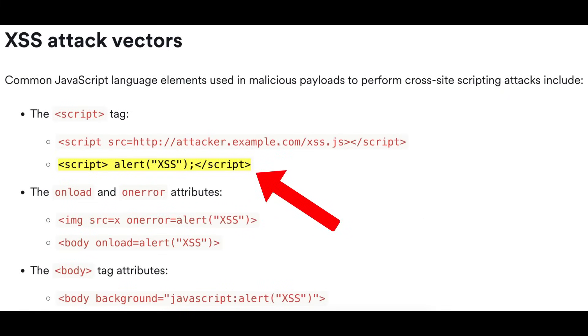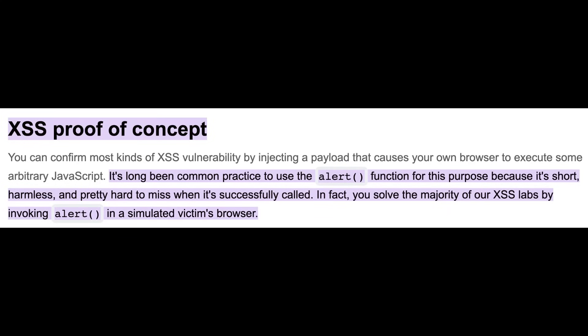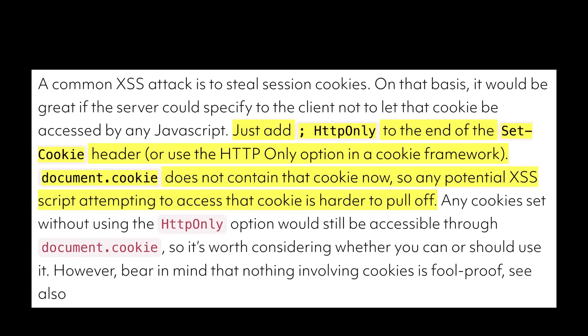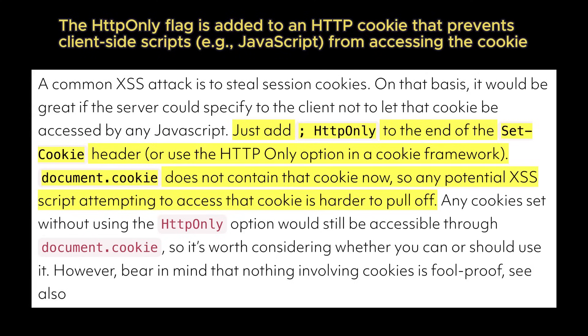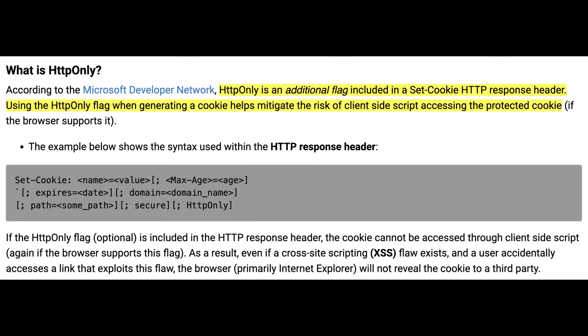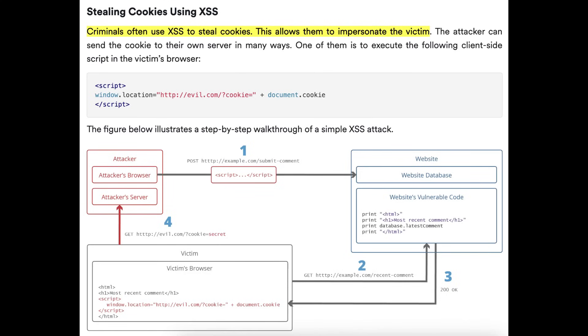The standard alert('XSS') script tag is merely a proof of concept. A real attacker's payload is designed for stealthy data exfiltration, and the primary target is the user's authenticated session. This entire class of attack fundamentally relies on one specific server-side misconfiguration: failing to set the HTTP-only flag on the session cookie. When a cookie is set without the HTTP-only flag, it is accessible to any JavaScript running on that page — including an attacker's injected script — via the document.cookie object. If that flag is set, document.cookie will still run, but the protected cookie will be omitted from the return string, rendering this attack vector useless. Assuming that flag is missing, here is the technical breakdown of an attack: session hijacking via cookie exfiltration. The objective is to steal the authenticated session cookie, send it to an attacker-controlled server, and use it to impersonate the victim.